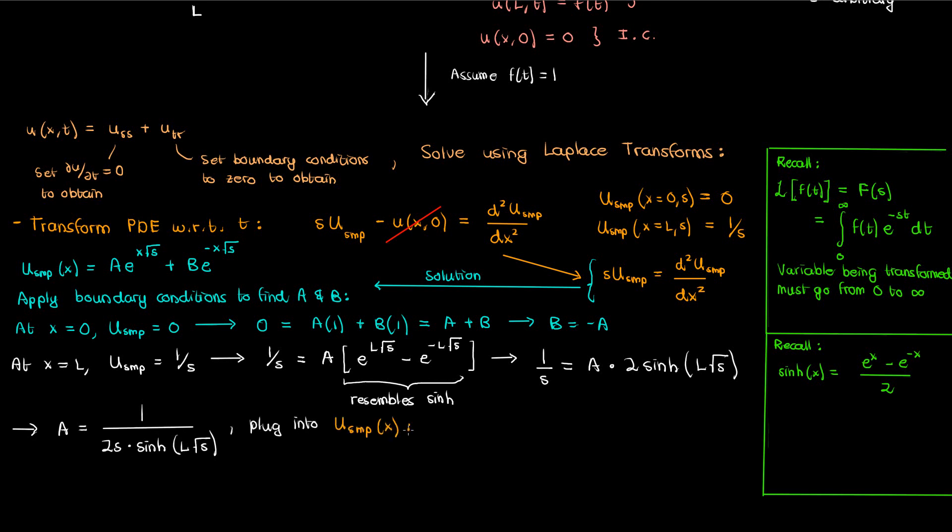If we plug this into the equation for capital U, this is what we end up with. Once again, the term in the brackets is directly related to the hyperbolic sine function. Specifically, it's equal to 2 times the hyperbolic sine of square root of S times x. And if we make the substitution, this is the final answer we get for capital U sub SMP of x. Note that the 2s have cancelled out from the numerator and denominator.